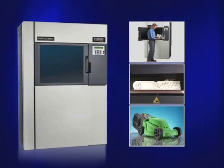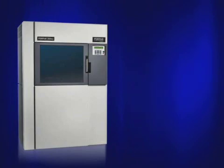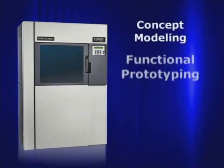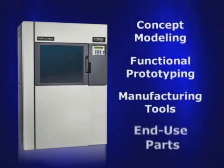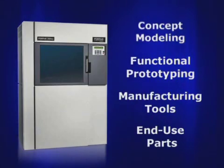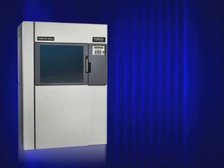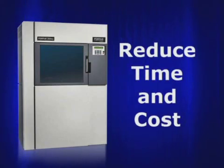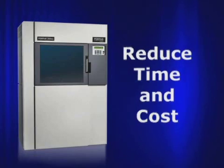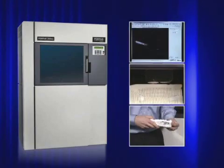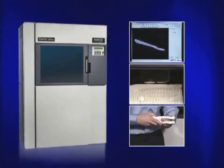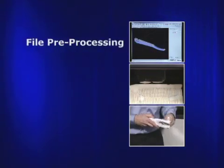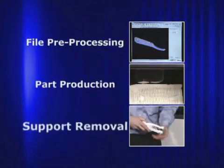These parts can be used for a range of applications, including concept modeling, functional prototyping, and the production of manufacturing tools and end-use parts. Customers choose Fortis systems because they reduce time and cost from their design and manufacturing processes. The Fortis 360MC produces thermoplastic parts in just three steps: file preprocessing, part production, and support removal.